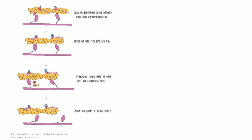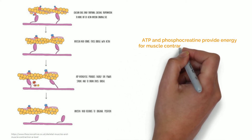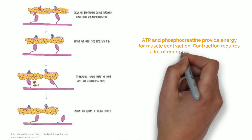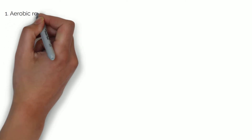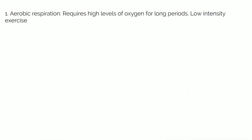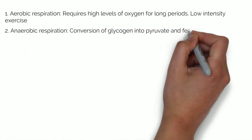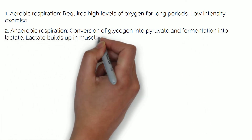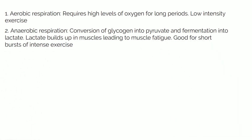Muscle contraction requires a lot of energy. ATP and phosphocreatine provide energy for muscle contraction, and ATP needs to be continually generated. There are three ways for this. One is aerobic respiration — this requires a high level of oxygen for long periods, so it's good for low intensity exercise. Two is anaerobic respiration — this is the conversion of glycogen into pyruvate and further fermentation into lactate. Lactate builds up in muscles leading to muscle fatigue. This is good for short bursts of intense exercise.